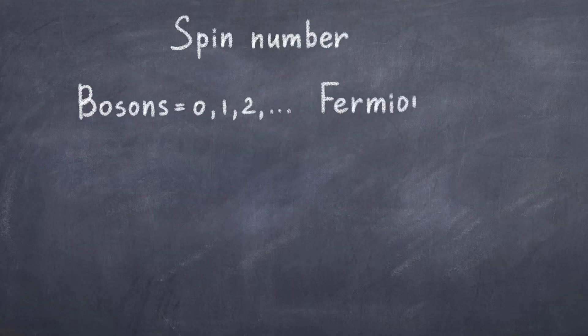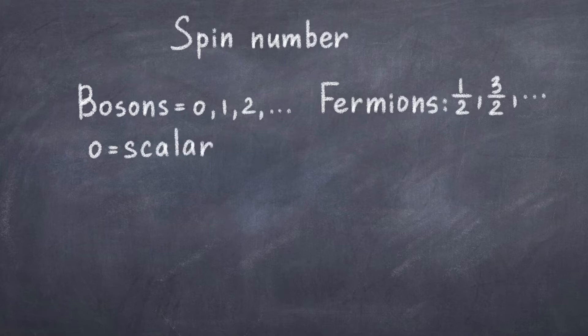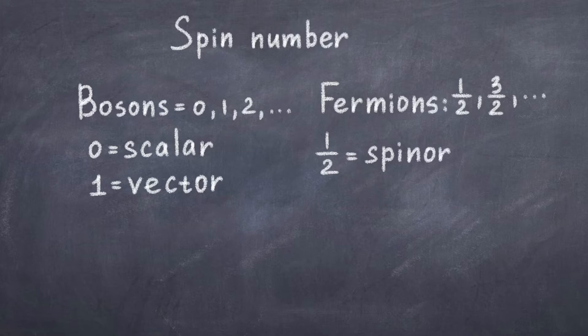The standard model is made from three types of particles. Those particles with three different spin numbers. Recall that we can divide particles into two spin categories. There are particles with integer spin like 0, 1 and 2, and these particles are called bosons. Then we have particles with half integer spins like a half and three halves. These particles are called fermions. The standard model is made of spin zero, spin half and spin one particles.